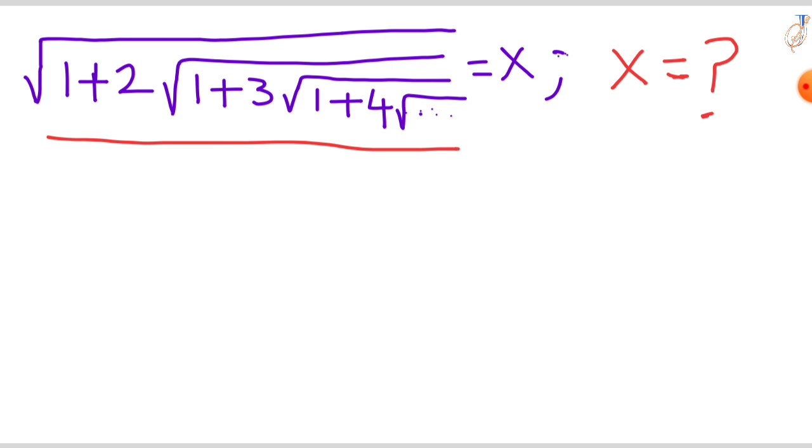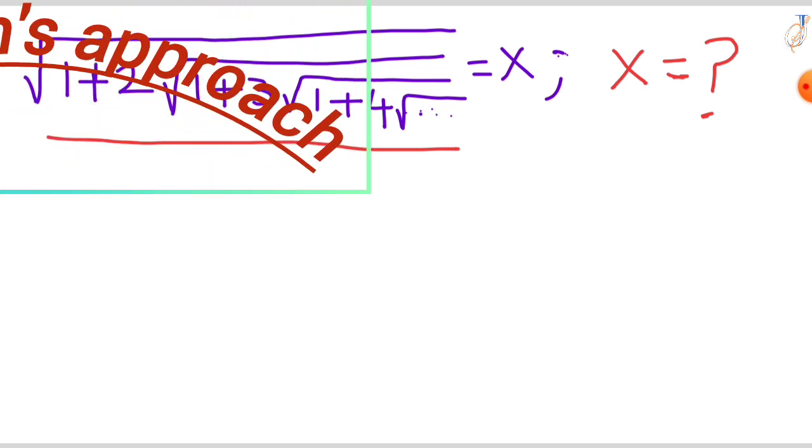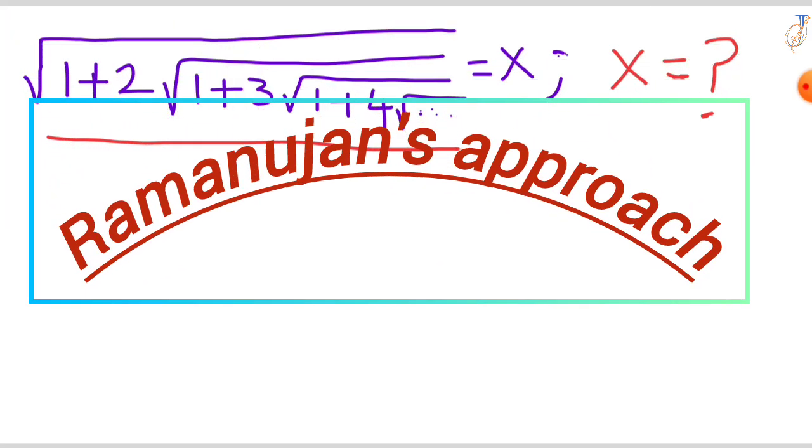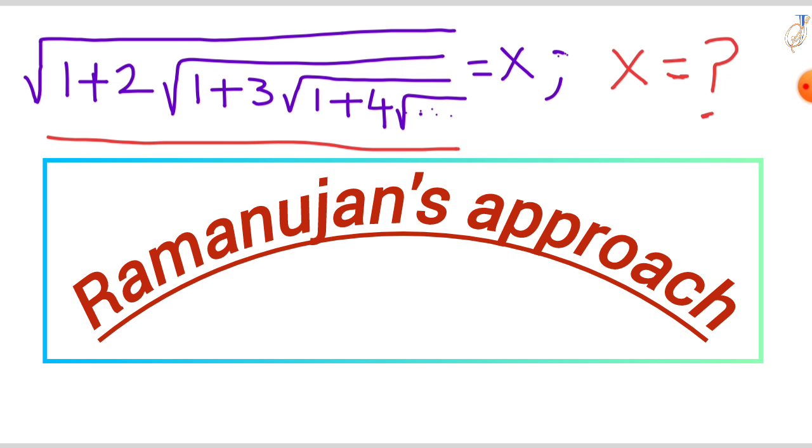Despite its seemingly complex nature, Ramanujan's approach simplified the problem by cleverly manipulating perfect squares and their factors. This question was posed by Srinivas Ramanujan in the Journal of the Indian Mathematical Society over a hundred years ago.